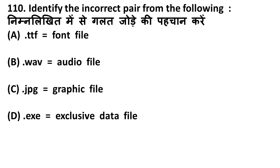Next question: identify the incorrect pair from the following file extensions. TTF is for font file — correct. WAV is for audio file — correct. JPG is for graphic image file — correct. DOT EXE is for executable file — not exclusive file. So the incorrect pair is the one claiming EXE is an exclusive file extension, when it is actually an executable file.